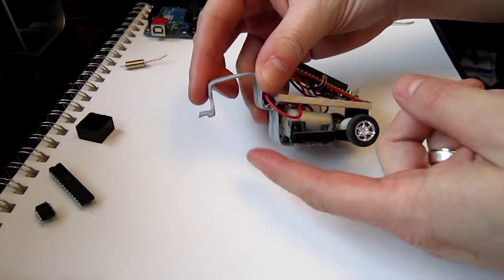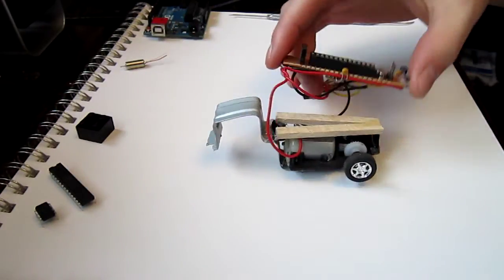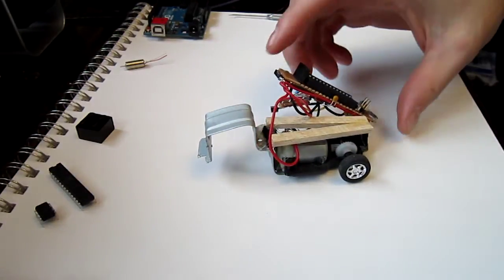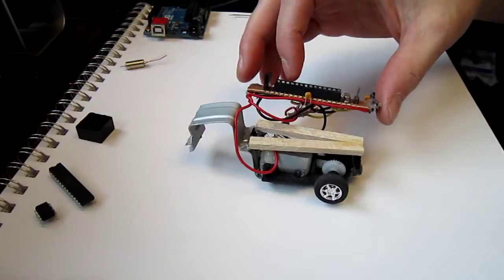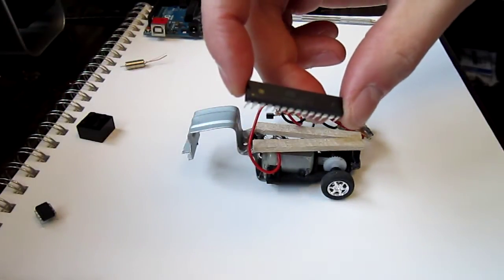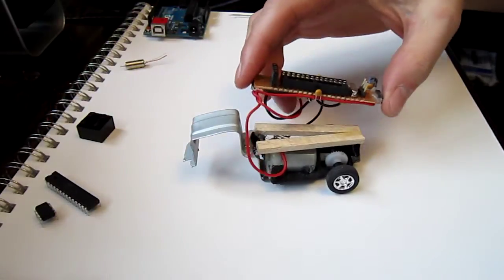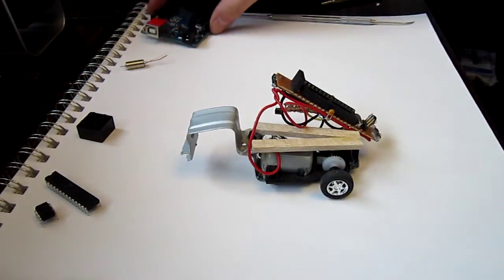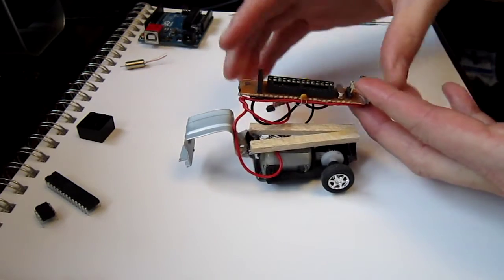It normally had a little servo here to steer and it was powered by a 9 volt battery with an Arduino on top. Not an Arduino but actually the Atmel chip that goes on Arduino, but basically this acts as the Arduino board would do but in a smaller version of an Arduino board.